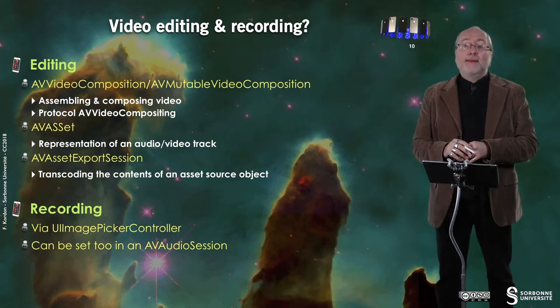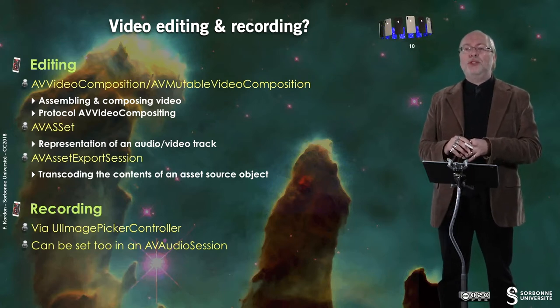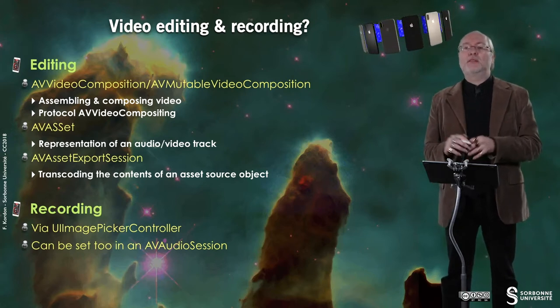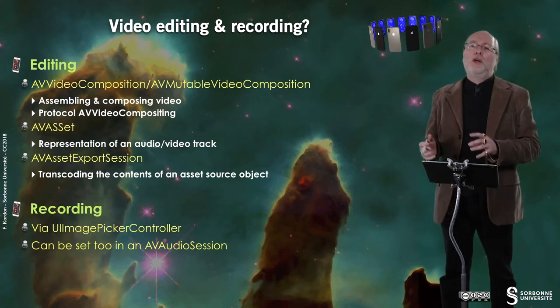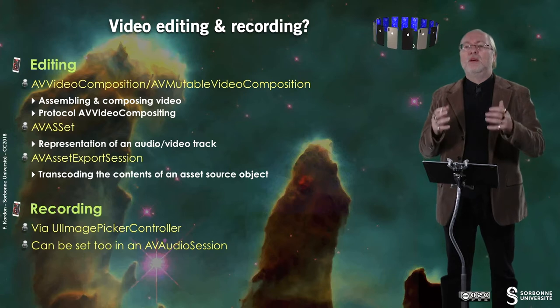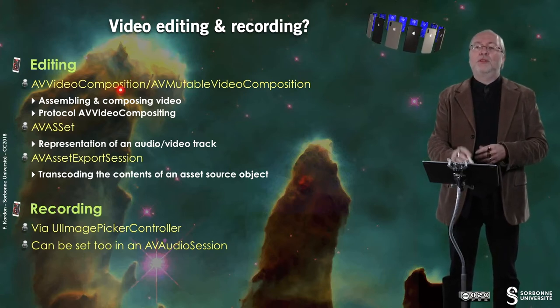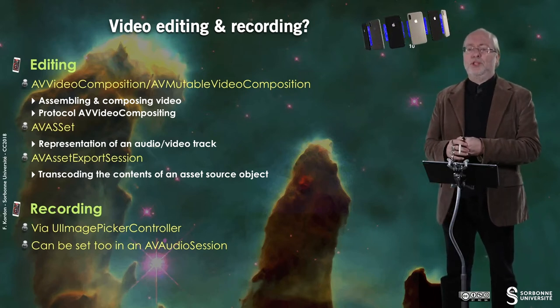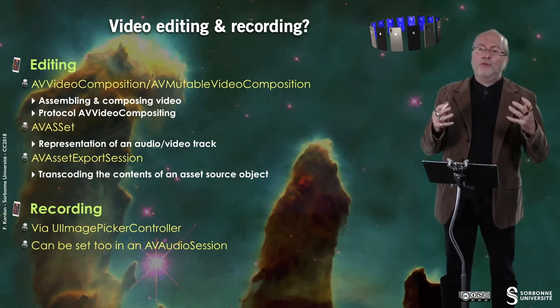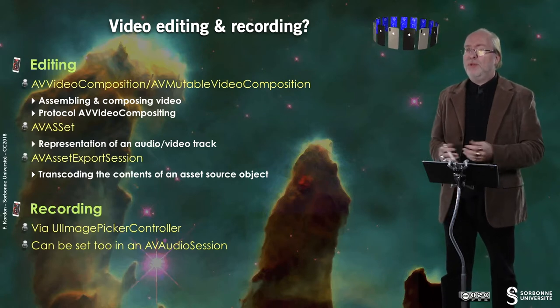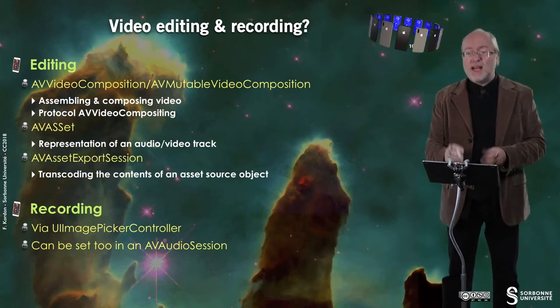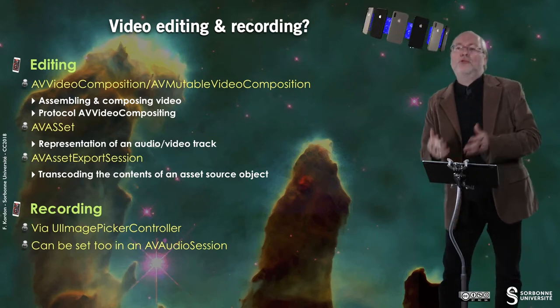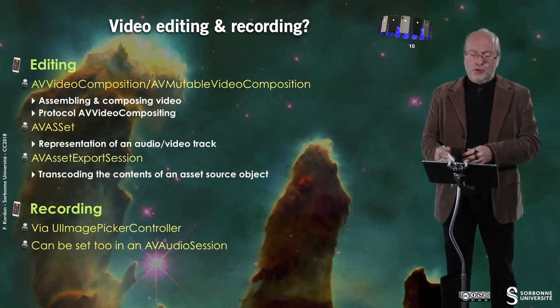A bit about video editing and recording. For editing, you have AVVideoComposition and AVMutableVideoComposition, which let you assemble and compose video. There is an associated protocol called AVVideoCompositing. The difference between the two components is that one is mutable and the other is not — it depends on whether you are doing video editing or just fetching an already-edited video. You also have AVAssets, which is a representation of an audio or video track, and an AVAssetExportSession to encode the contents of an asset source object, typically a video.